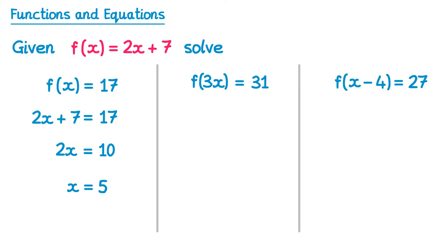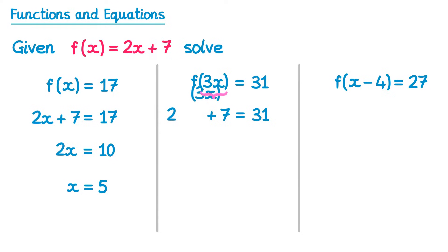This second equation is a little bit different. It doesn't say f(x) equals — it says f(3x) equals 31. So we'll still leave the right hand side as 31, and for the left hand side we start with f(x) which is 2x + 7, but we've been asked for f(3x) instead. This means the input is 3x rather than x, so we replace all of the x's in our function with 3x, giving us f(3x) = 2(3x) + 7.